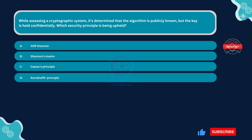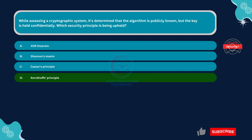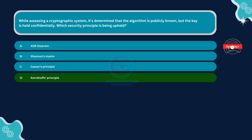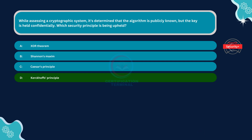The correct answer is Option D: Kirchhoff's principle. Kirchhoff's principle states that the security of a cryptographic system should not rely on the secrecy of the algorithm, but rather on the secrecy of the key. In the scenario described, the fact that the algorithm is publicly known aligns with Kirchhoff's principle, as the security of the system hinges on the confidentiality of the key rather than the secrecy of the algorithm.